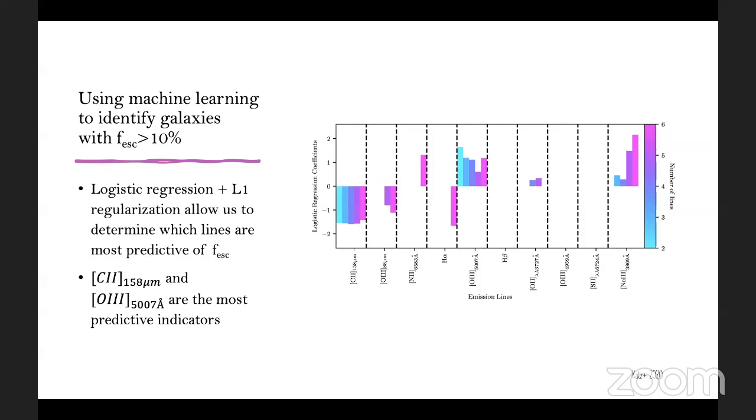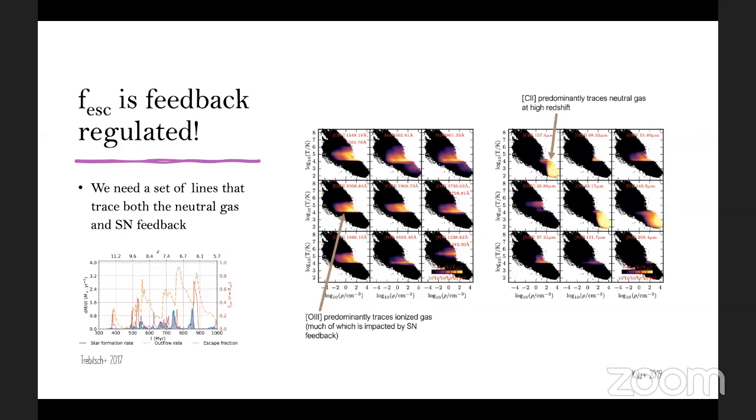I'm just showing you a few examples of these logistic regression coefficients compared to the different lines. What I want you to focus on is whether or not the logistic regression coefficient is positive or negative. If the coefficient is negative, it means that that line anti-correlates with leaking radiation. In contrast, if it's positive, it means that it positively correlates with leaking radiation. For the most part, the two most important lines that we see from these logistic regression models is the carbon-2 158 micron line and the oxygen-3 5007 angstrom line. As you've heard earlier in this session, F escape is a feedback regulated quantity. So in order to actually identify Lyman continuum leakers, really what you need is lines that are going to correlate with the presence of feedback. For example, as you're looking here at density temperature diagrams, we have our oxygen-3 line is actually populating the regions of ionized gas that's seemingly being impacted by supernova feedback. Hence why oxygen-3 5007 angstroms correlates with high Lyman continuum leakage. In contrast, our carbon-2 158 micron line is being emitted mostly from the neutral gas regions. And of course, if you have neutral gas, that's going to inhibit F escape. So the positive and negative correlations are directly related with where these lines populate in the interstellar medium.